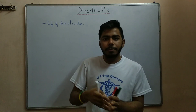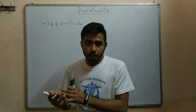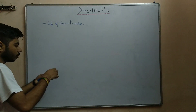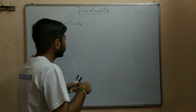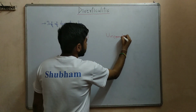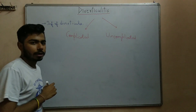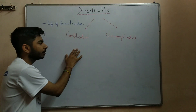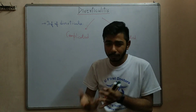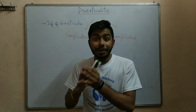Diverticulitis can result from some kind of perforation or rupture of the diverticula. So complicated and uncomplicated are the two kinds. In the uncomplicated type, there are no further complications. In the complicated type, there can be abscess, perforation, or fistula. Diverticulitis is essentially the result of rupturing of diverticula.